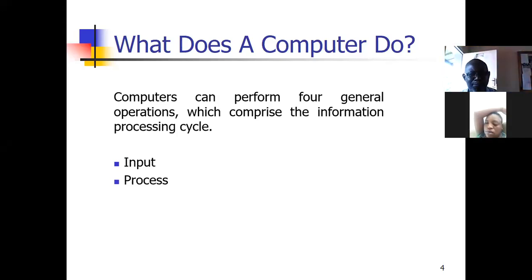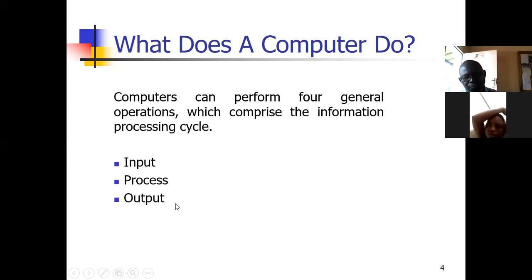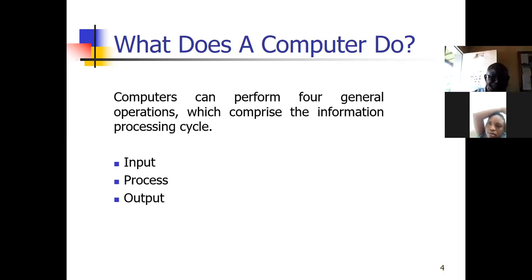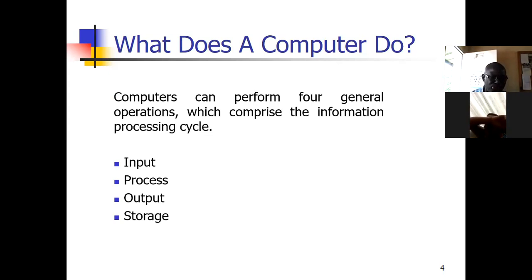The computer system will manipulate the data imported by the input devices — that's another operation performed by the computer system with the help of the CPU. Then another operation conducted is the output of data. Storage is also important because it keeps whatever data is supposed to be processed, coming in and going out of the computer system. After data has been processed and is supposed to be displayed, it has to be kept in the storage devices.